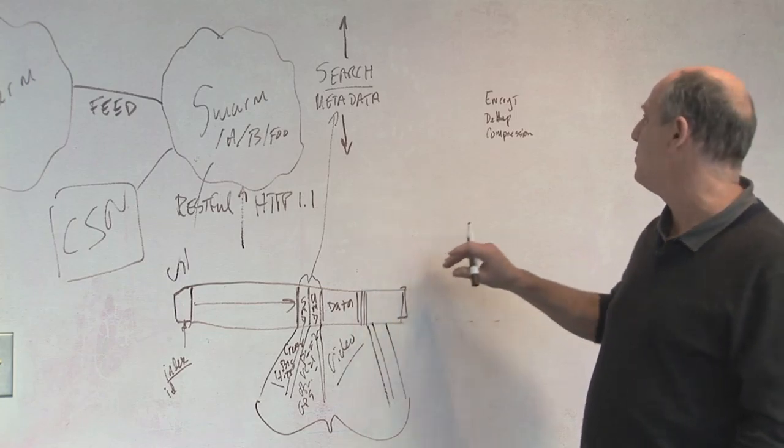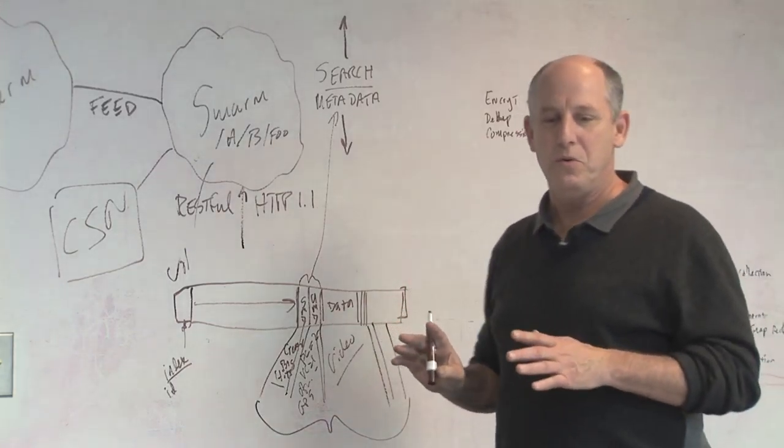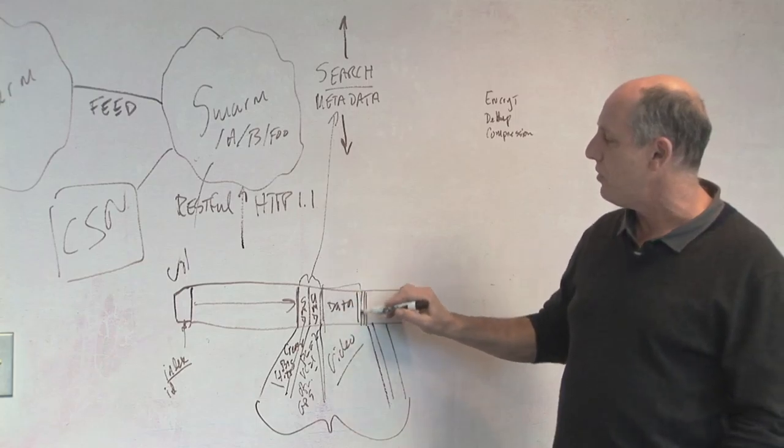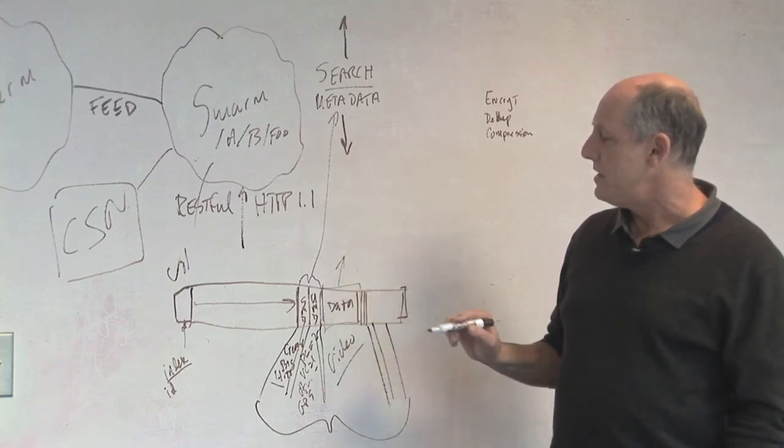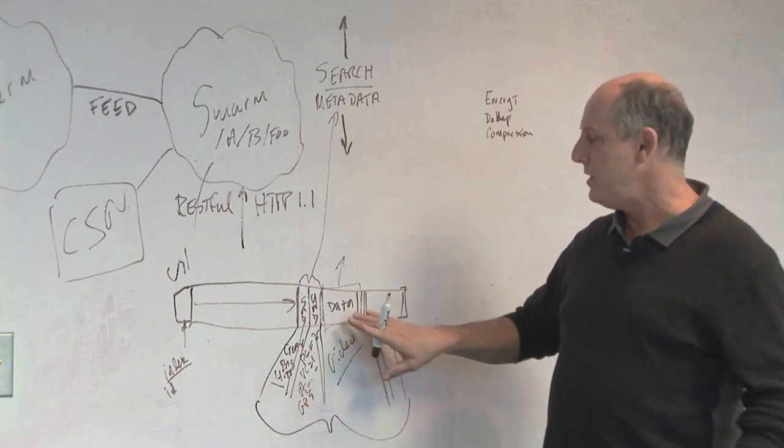So we've looked at a few things which are encryption, dedupe, and compression. From an encryption point of view, we would rather that the application manage the encryption of the data, because that's their key. They can manage their keys, they can manage their data. There's no reason for us to do that.